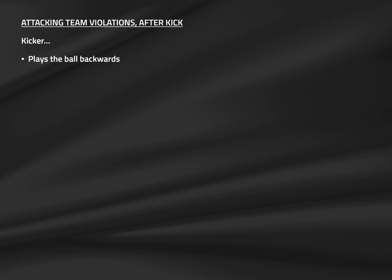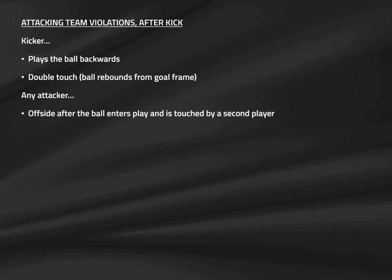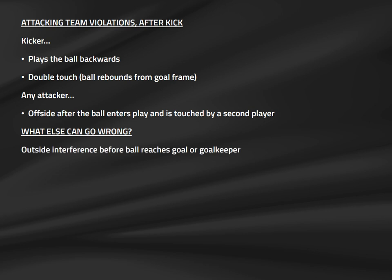For the defending team, the goalkeeper must have one foot on the goal line until the ball is kicked and may move sideways but not forwards or backwards. The goalkeeper's teammates can enter the penalty area or arc early or move closer to the goal line than the penalty mark before the kick. After the ball is played, additional violations become possible: the kicker may play the ball backwards (a penalty kick must be played forward), the kicker could commit a double touch if the ball rebounds from the goal frame, and offside can come into play once the ball is touched by a second player. If the ball goes flat or is interfered with before reaching the goalkeeper or goal, this is not a violation but requires a retake.